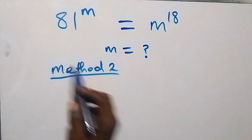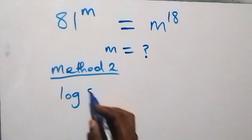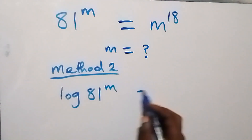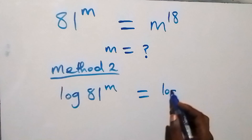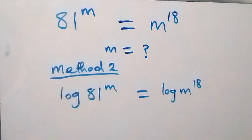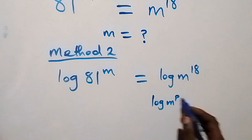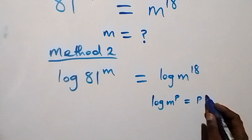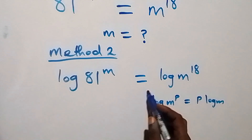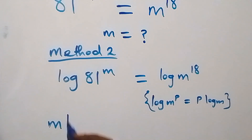For method two, we take the log on both sides. We have log of 81 raised to power m, equals log of m raised to power 18. Applying the power law of logarithms — where log of a raised to power p equals p times log a — this power m comes down and we have m times log 81.